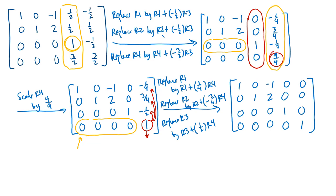We've reached reduced echelon form — it was a lot of steps, but the process is methodical: one column at a time, moving left to right, fixing each column completely before moving on. Don't cast around looking for what to do next — follow the outline. The best way to get good at row reducing matrices is to practice, but practice following a methodical, step-by-step approach.